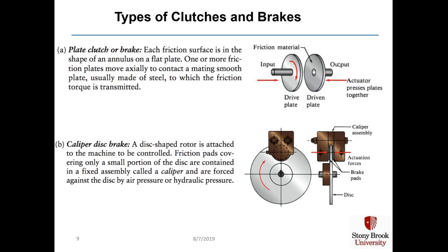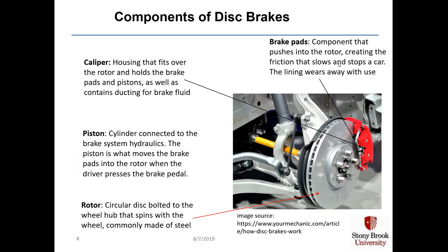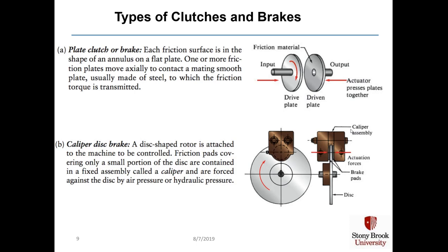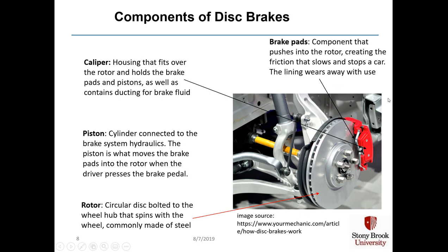A caliper disc brake — as shown for the automotive brake — has a disc-shaped rotor attached to the machine to be controlled, with friction pads covering a small portion of the disc. The friction pads are contained in the caliper and forced against the disc by air pressure or hydraulic pressure. This side view shows the caliper system and brake pad, analogous to a view looking across the rotor.